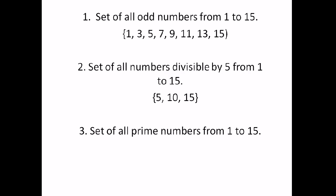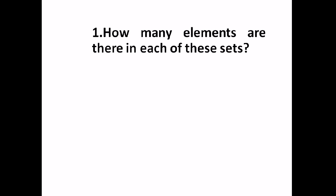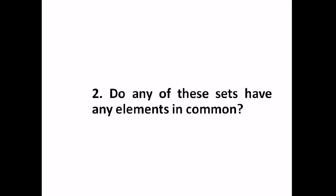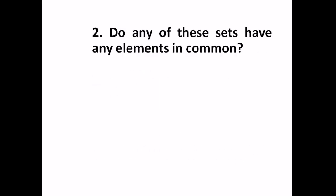Last group — set of all prime numbers from 1 to 15: 2, 3, 5, 7, 11, 13. So how many elements are there in each of these sets? The set of odd numbers from 1 to 15 has 8 elements. The set of numbers divisible by 5 has 3. The set of all prime numbers from 1 to 15 has 6.